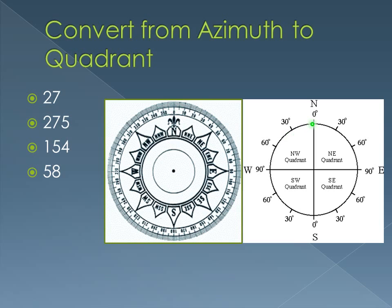For our quadrant system, it's divided into four quadrants: northwest, northeast, southeast, and southwest. We always either start at north or south and go either east or west from there.